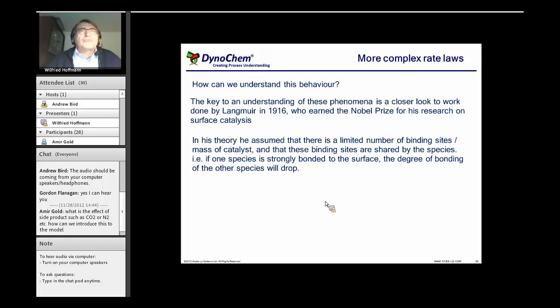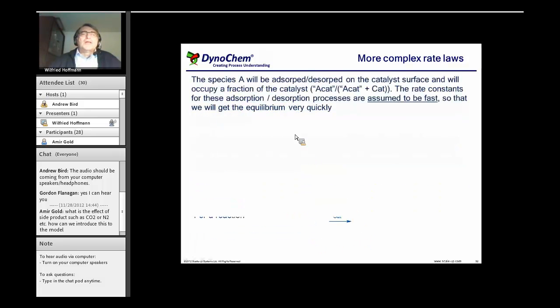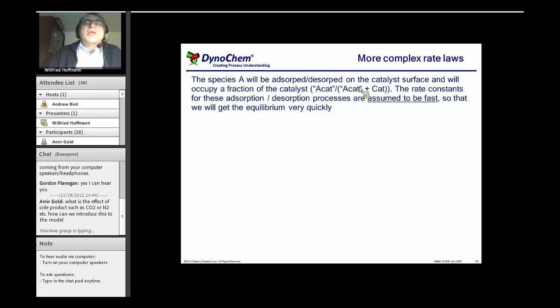He assumed then that for a reaction, for example an overall reaction like this, we can define the following steps. The species A will be adsorbed on the catalyst surface and will occupy a fraction of the catalyst. Langmuir described this equilibrium as a fraction going from 0 to 1.